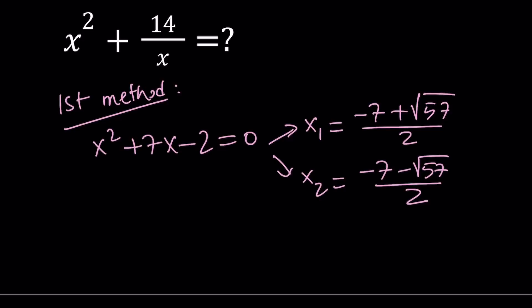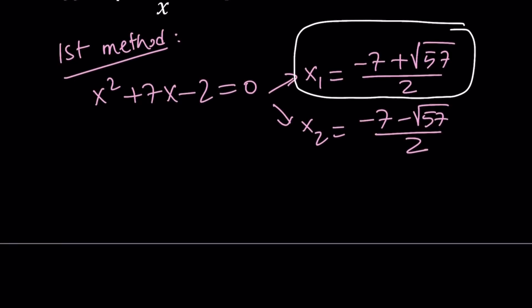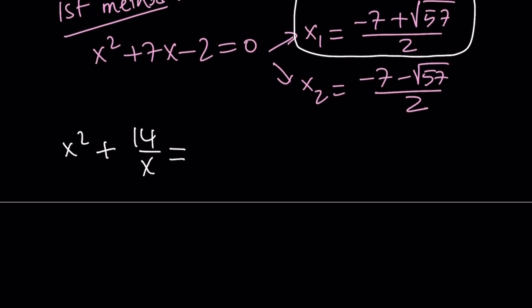Great. So we're going to use one of these roots. Which one? I'm going to use the first one. So let's go ahead and use x sub 1 and plug it into our expression that we're trying to evaluate. So we're supposed to evaluate x squared plus 14 over x. Now, we're going to replace x with x1, but let's go ahead and square it first before we can find what it is.